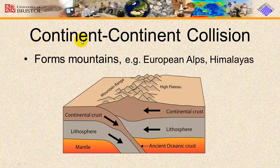When continental crust pushes against continental crust, both sides of the convergent boundary have the same properties. Continental crust is thick and buoyant, which means that neither side of the boundary wants to sink beneath the other side. As a result, the two plates push against each other and the crust buckles and cracks, pushing up high mountain ranges and pushing down into the mantle. For example, the European Alps and the Himalayas have been formed this way.